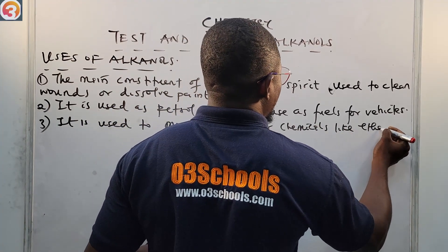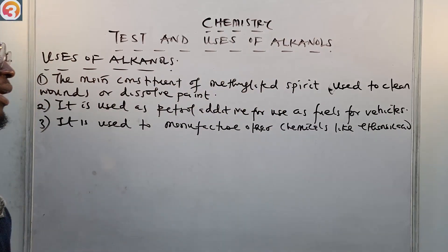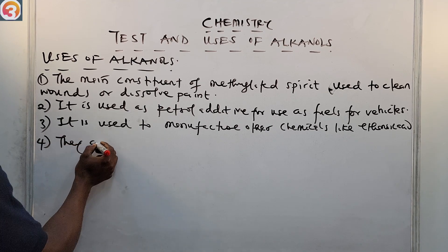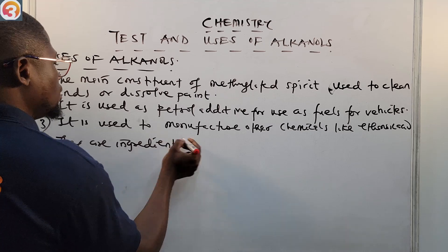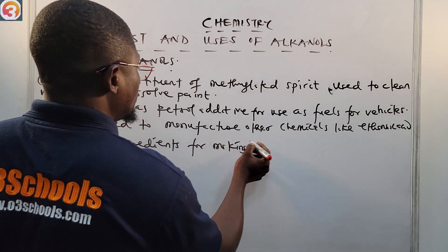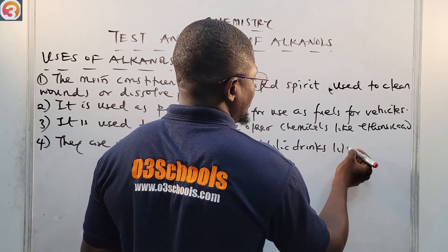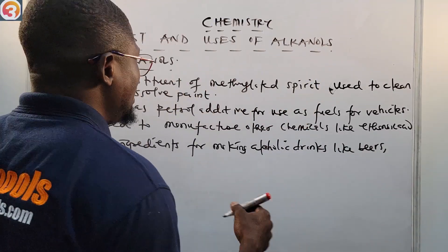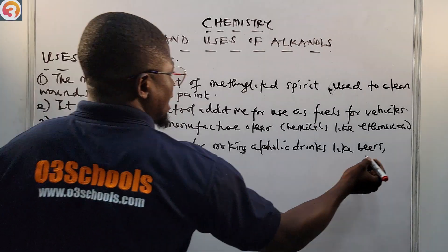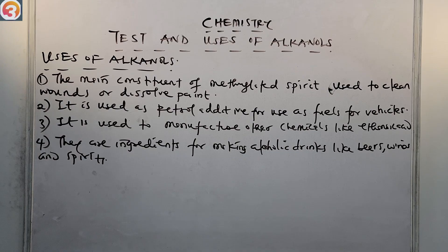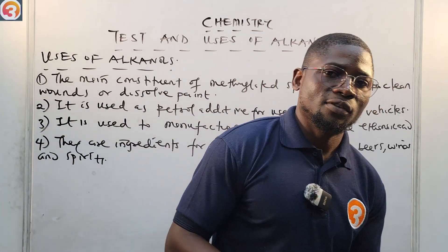Alkanols are used to manufacture other chemicals like ethanol and ethanoic acid. They are also used as ingredients for making alcoholic drinks such as beers, spirits, and wines. Those are the main uses of alkanols — keep these at the back of your mind.